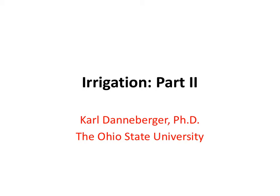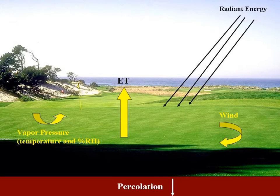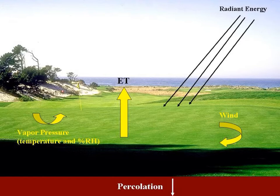An important factor in designing any watering system is evapotranspiration, or ET. ET is comprised of the transpiration rate of the turfgrass plants and the evaporation rate of the soil. ET rates are influenced by wind, temperature, air humidity, radiant energy, and the soil's water holding capabilities.